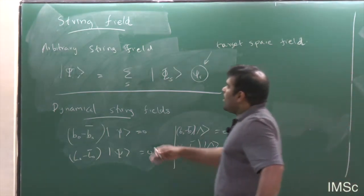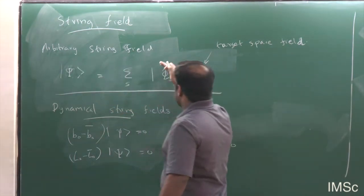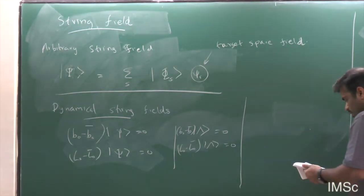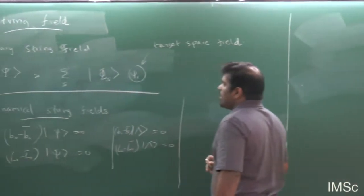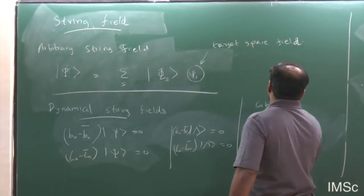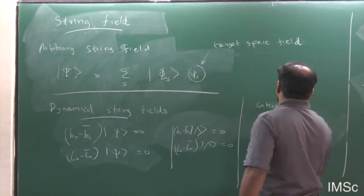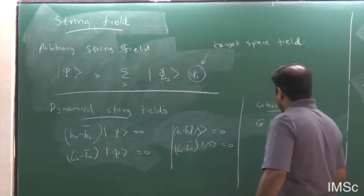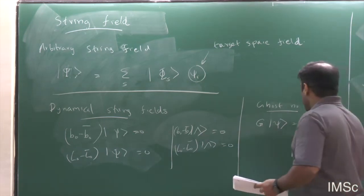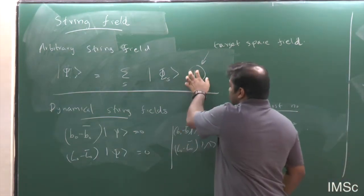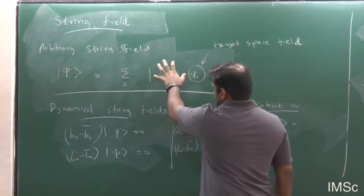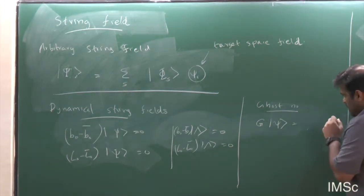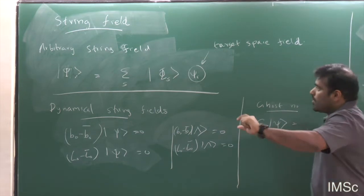You can figure out the ghost number for a string field by acting with the ghost number operator G on the states in the world sheet Hilbert space — just neglect the coefficients and act on the states, which tells you the ghost numbers for each component in the string field.